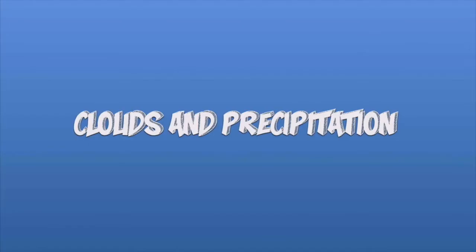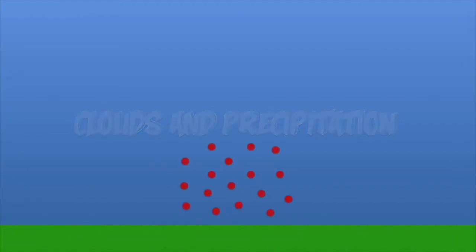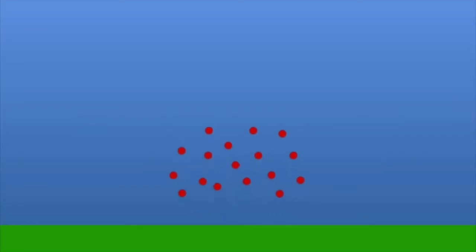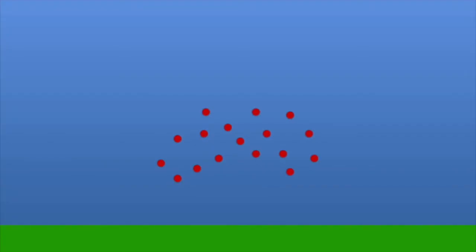We'll be exploring clouds and precipitation. Air can be lifted into the atmosphere in four different ways. The way that we've been discussing is called convective lifting, which occurs when unequal heating of the Earth's surface causes pockets of air to rise because they're less dense.